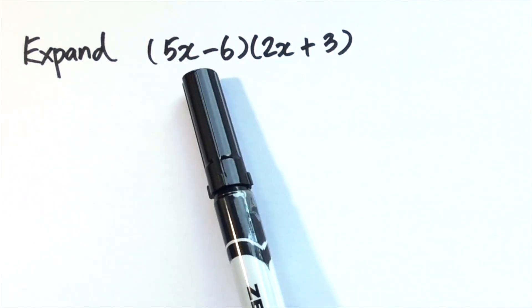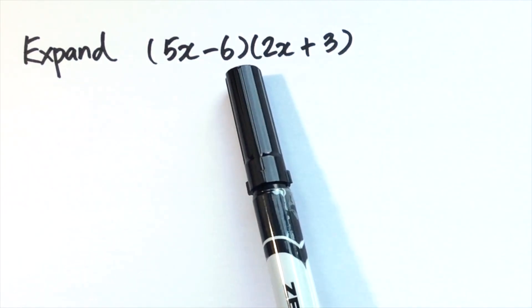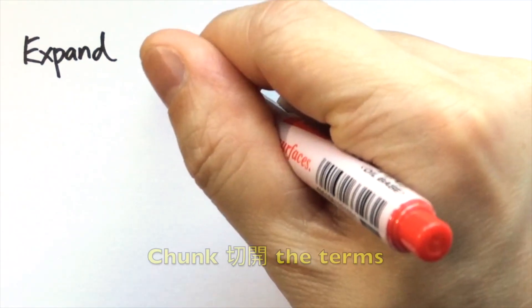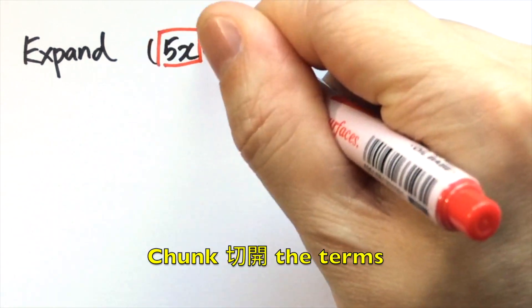Expand (5x - 6)(2x + 3). We can apply the distributive law to expand or remove the brackets, but first we have to be careful. We need to chunk or split the binomials into terms.